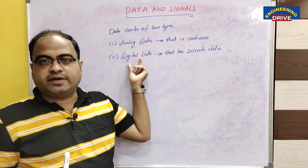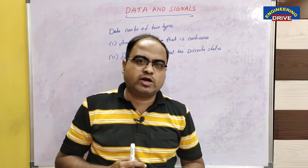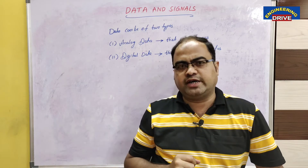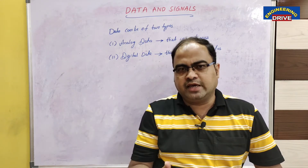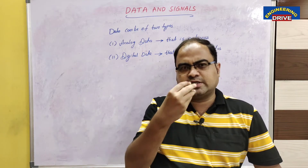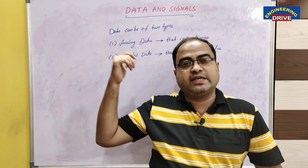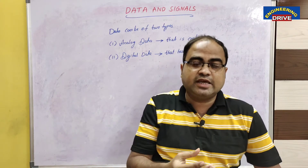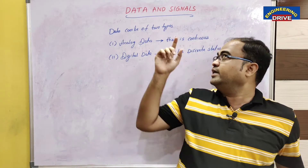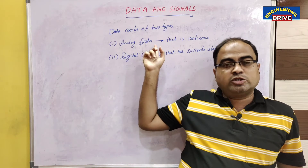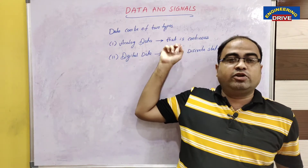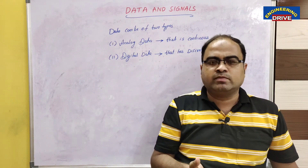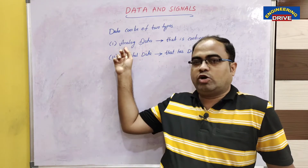Can you give one example of analog data? The best example is like I am speaking here — I am continuously speaking on some topics. Today I am discussing about what is data and signals, speaking in a non-stop way with small pauses. This type of speech, this type of lecture, we can take as an example of analog data, because analog data is continuous form of data.